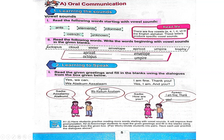The second vowel is E. Can you find a word which starts with E? Let's see — is it octopus? No. Is it envelope? Yes, it's envelope.